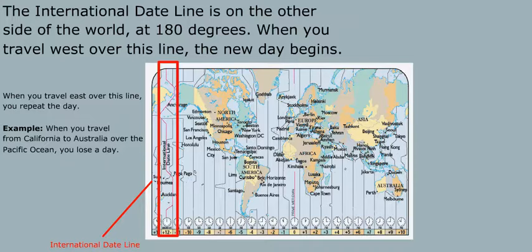When you travel west over this line, the new day begins. When you travel east over this line, you repeat the day. For example, when you travel from California to Australia over the Pacific Ocean, you lose a day.